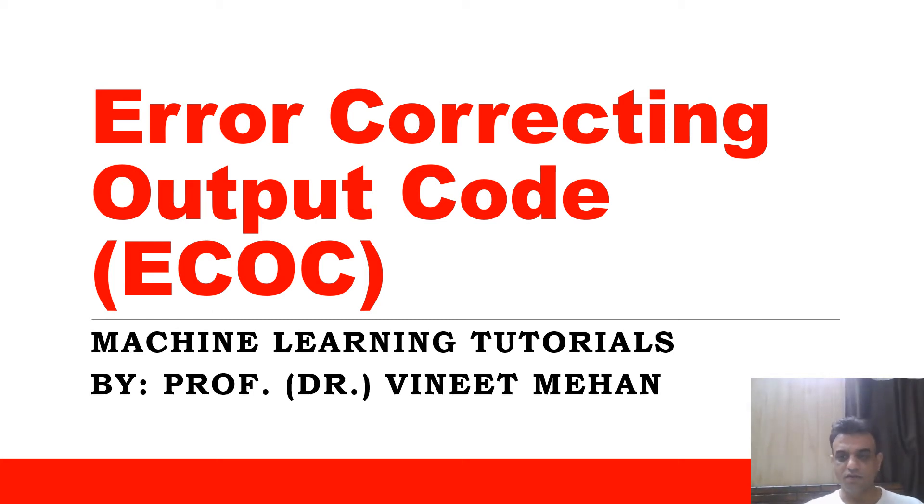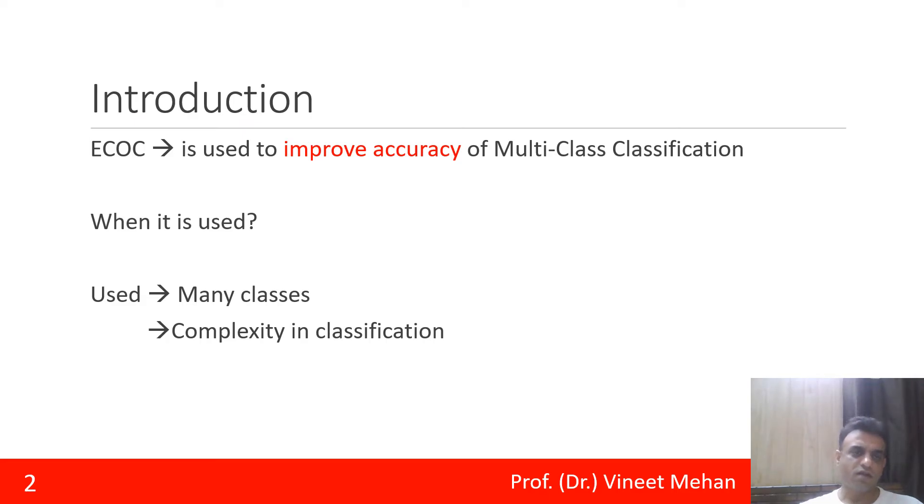Very good evening. The topic that we will be discussing today in this lecture is Error Correcting Output Code. This error correcting output code is basically used in multi-class classification problems, and the target area is that we need to improve the accuracy of our classification. When it is used, it is used when there are many classes and at the same time there is complexity in classification.